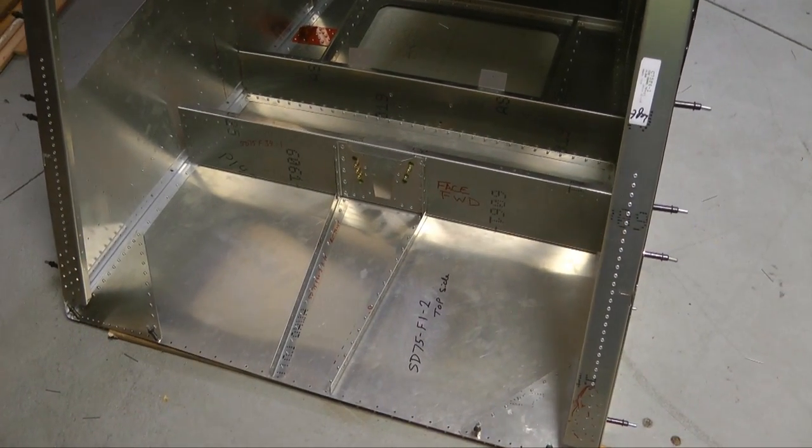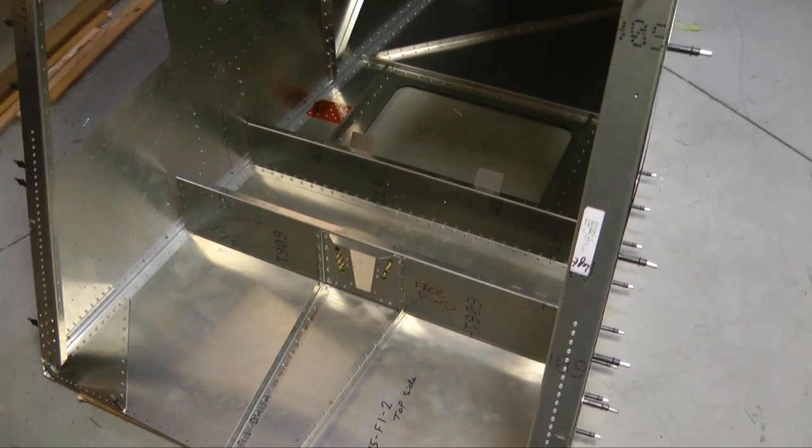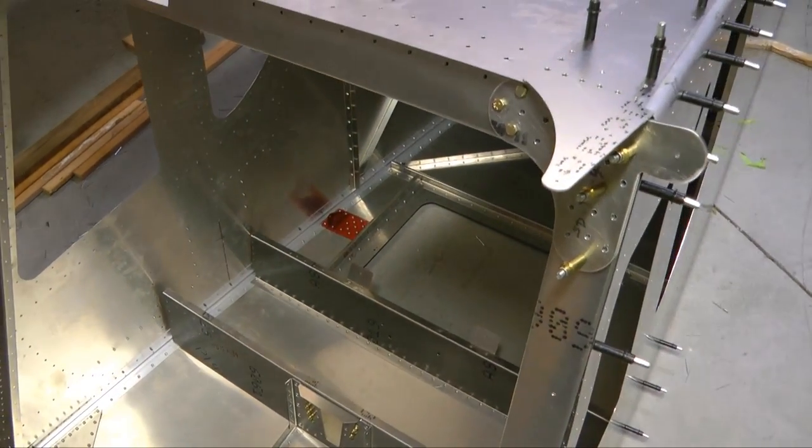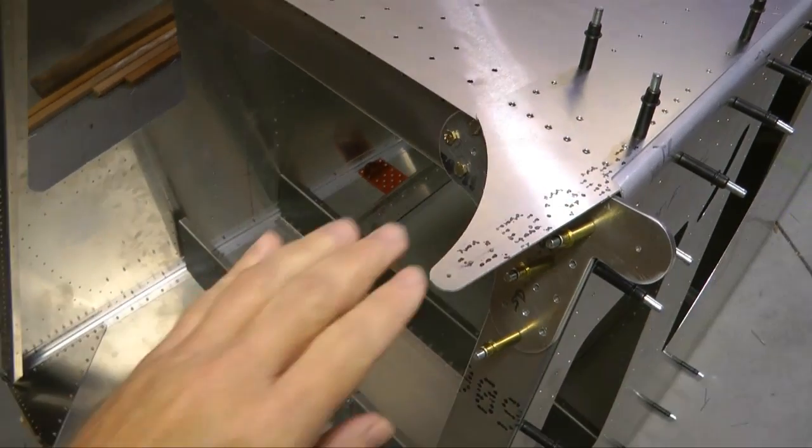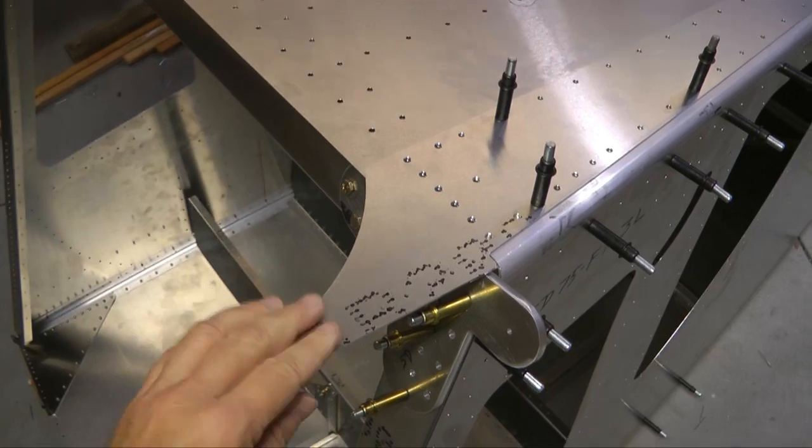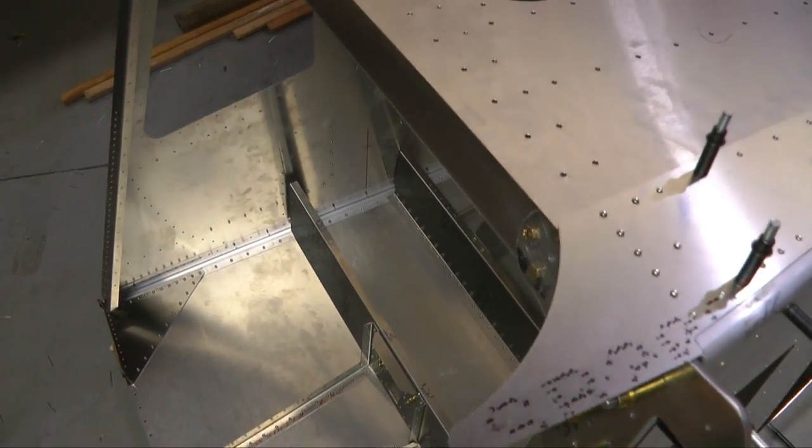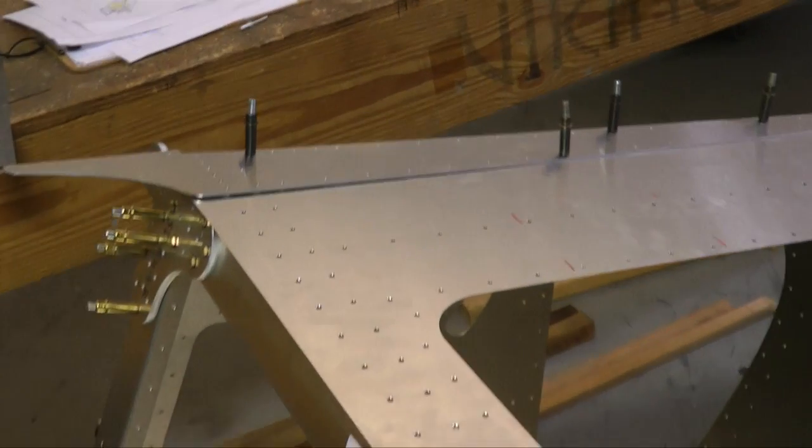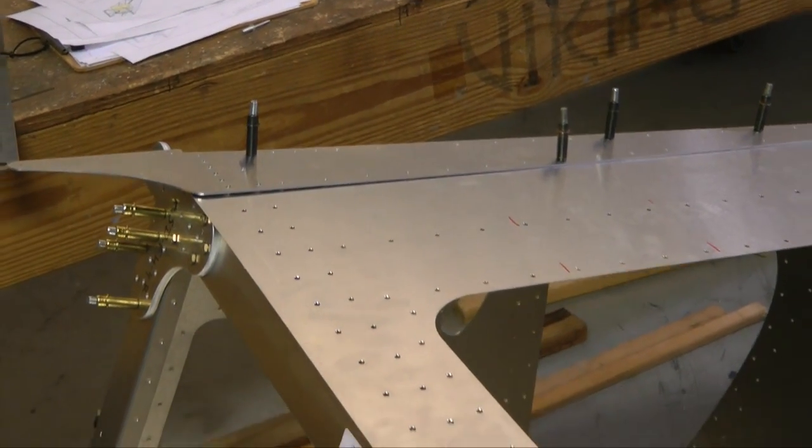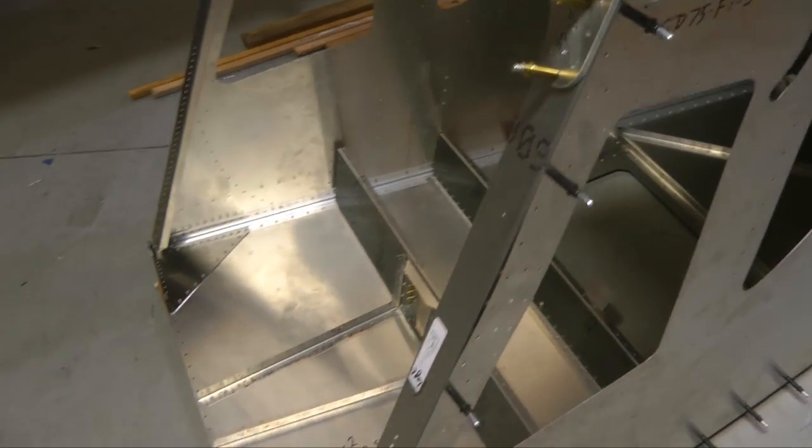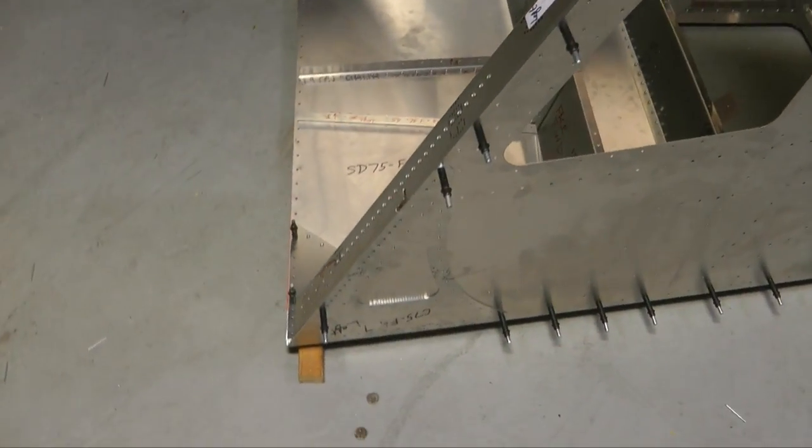And here's the fuselage with the components Clecoed in place. We've also Clecoed in the top gussets, one on each side. And also on the side, the side gussets.